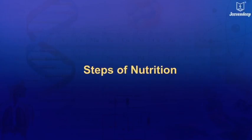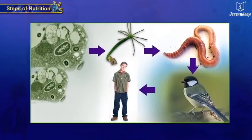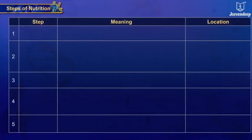With the increase in complexity of organisms, some organs of the body become specialized to perform specific functions. These specialized organs together constitute a complex digestive system. There are five main steps of nutrition found in all animals.